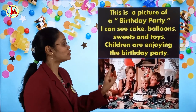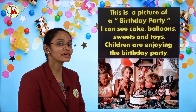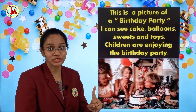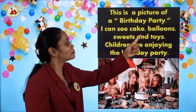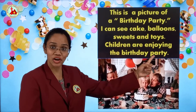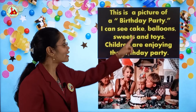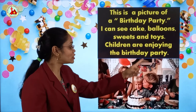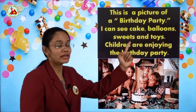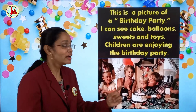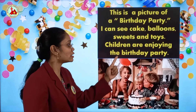So we will see the whole picture conversation. First point is: this is a picture of a birthday party. Second point is: I can see cake, balloons, sweets and toys. And the third and last point is: children are enjoying the birthday party.